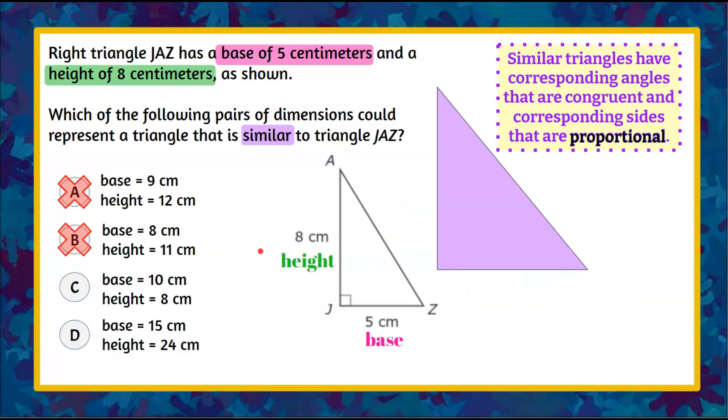All right let's clear our workspace and look at answer choice C. Now we have a base of 10. So we're going to go from 5 centimeters to a 10 centimeter base and we're going to have a height of 8 centimeters, no change in height. And let's determine if this is a proportional relationship. So our first ratio is going to be 5 to 10 and is that equal to the second ratio 8 over 8.